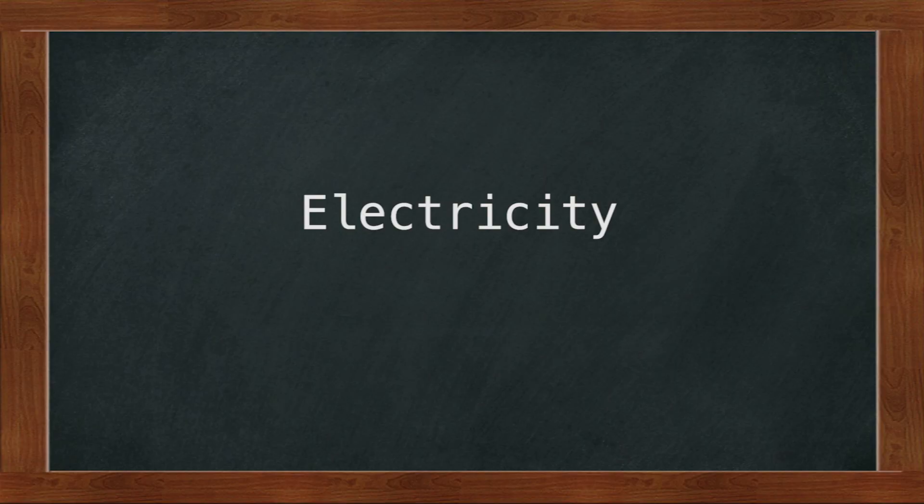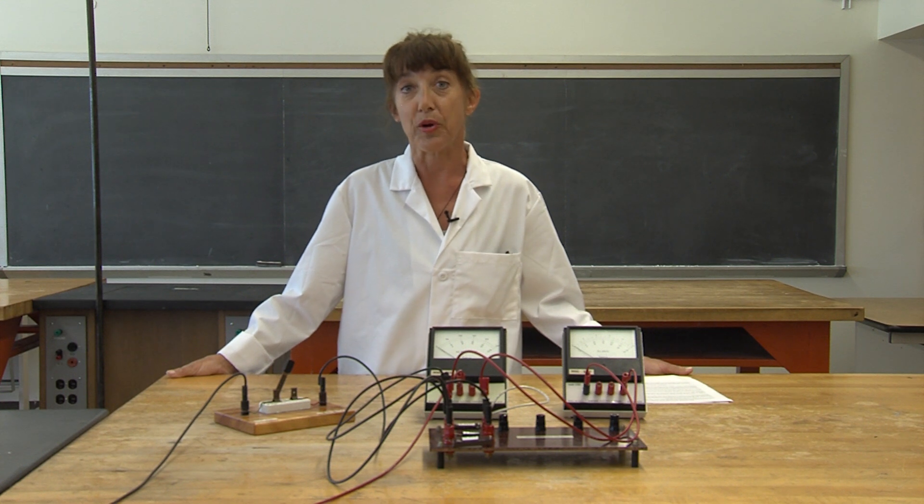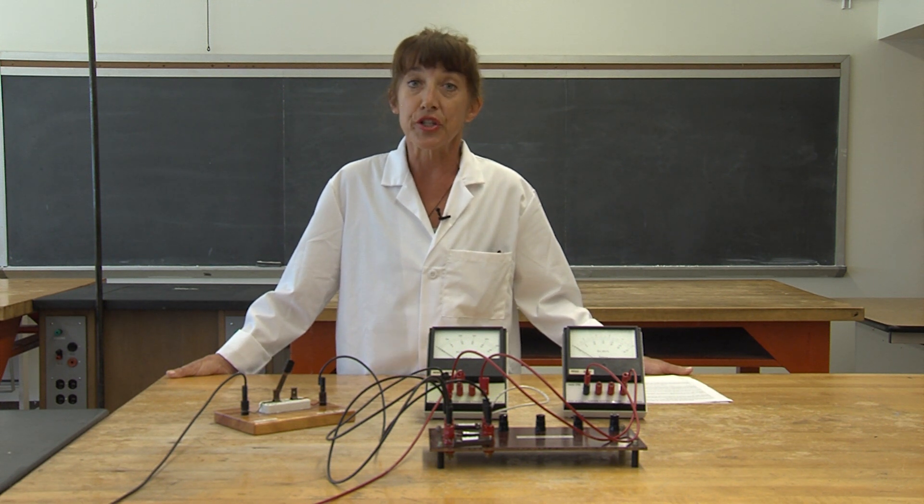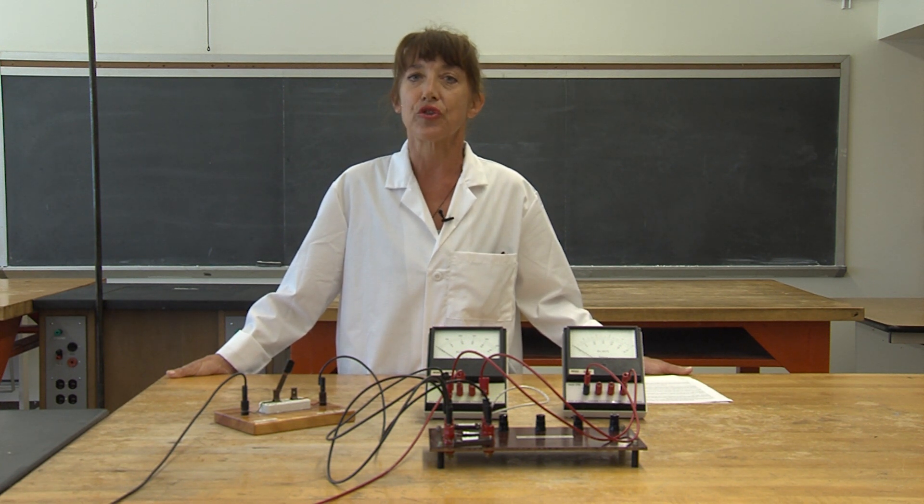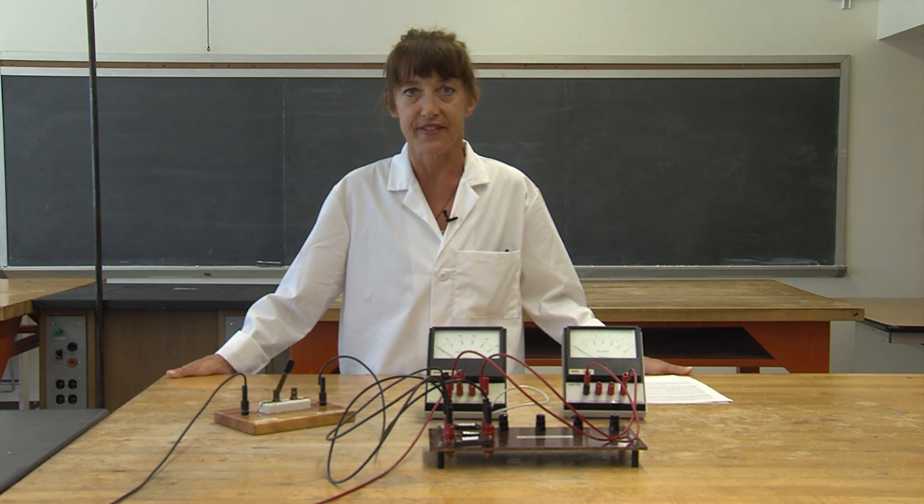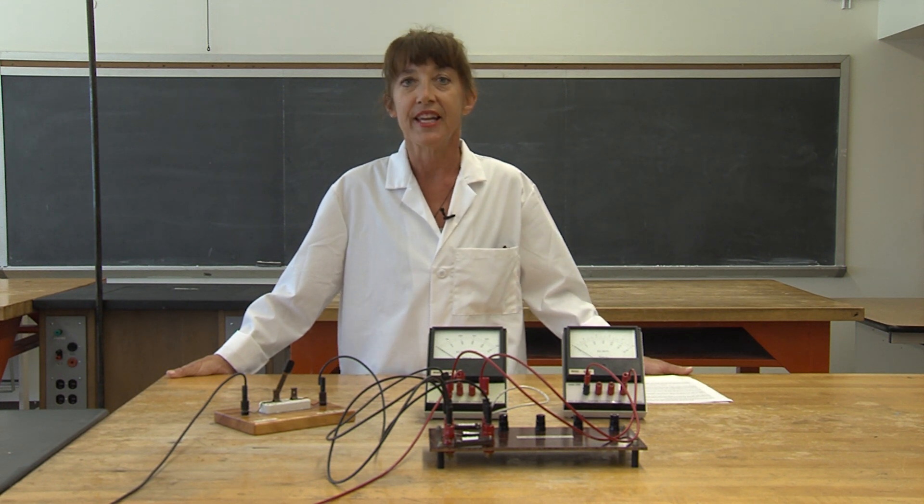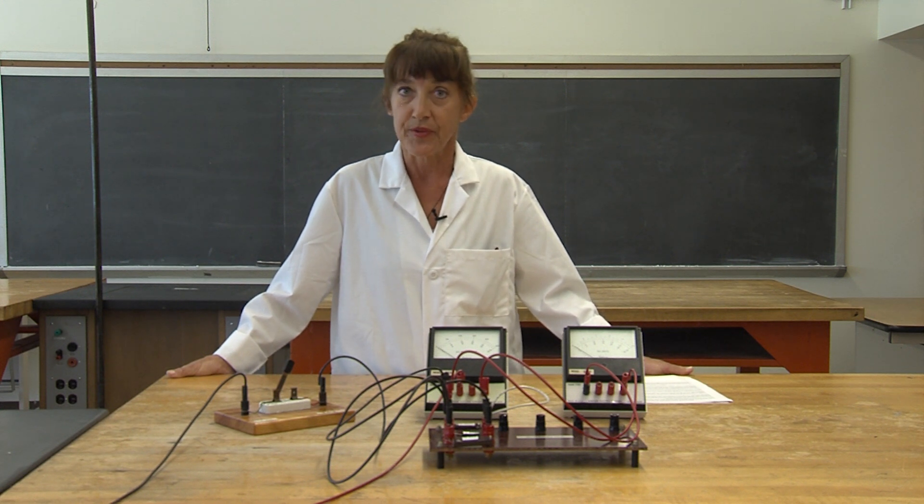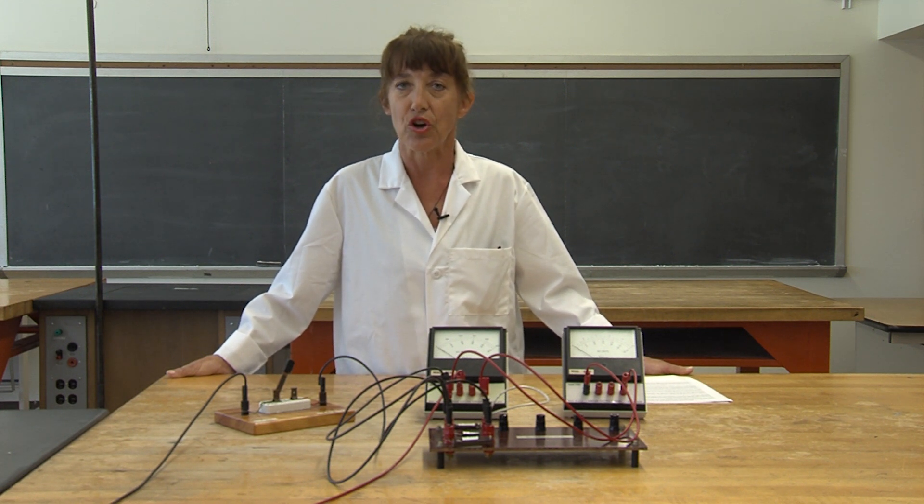Electricity is caused by the movement of subatomic particles. In a wire, this particle is the electron. The electron, by convention, has a negative charge. In order for the electron to move, it must experience an attractive force caused by positively charged particles. Furthermore, in most cases, there must be a circuit, a closed loop with oppositely charged poles through which the electron can move.